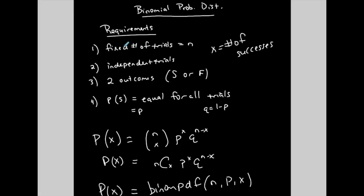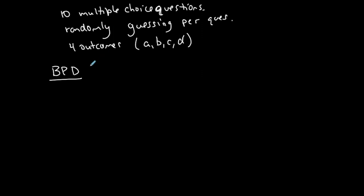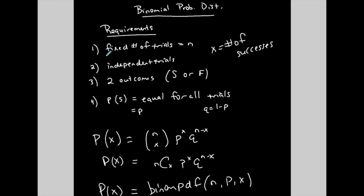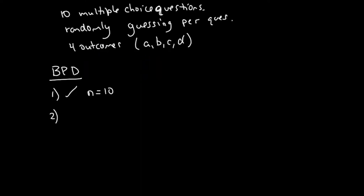Do we have a fixed number of trials? Yes — 10 total questions, so n equals 10. The second requirement is independent trials: does guessing on one question affect guessing on the next? No, because I'm randomly picking A through D each time. So we have independent trials.